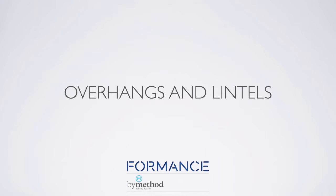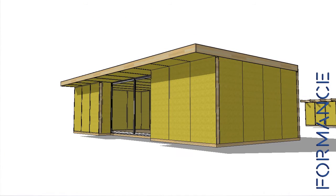In this tutorial we're going to quickly touch base on overhangs and lintels using formance panels. Let's look at this project. We are using formance panels for walls and roof, and the roof panels are spanning approximately 4.8 meters on a selected thickness. The extent of the 6.1 meter long panel can be utilized as an overhang.